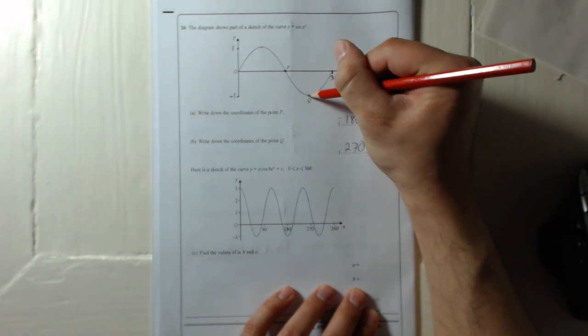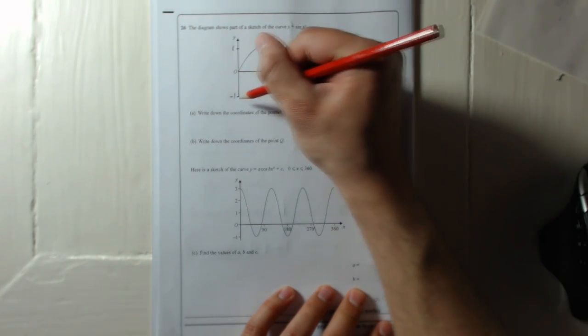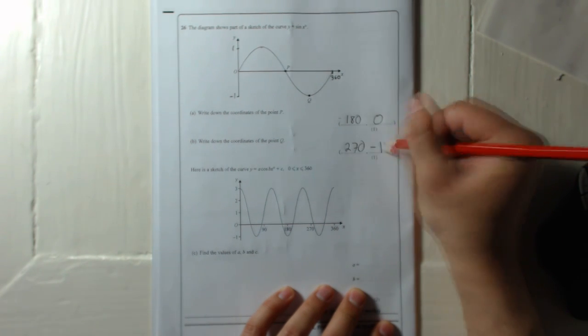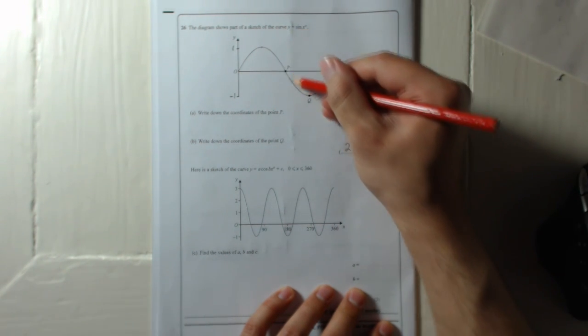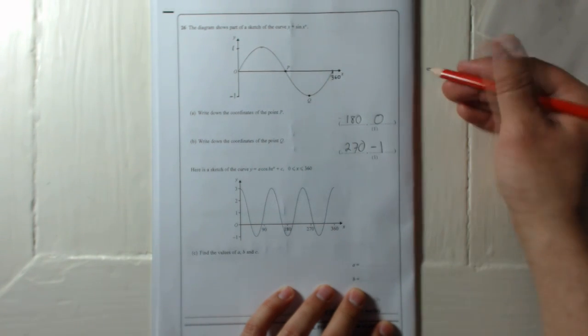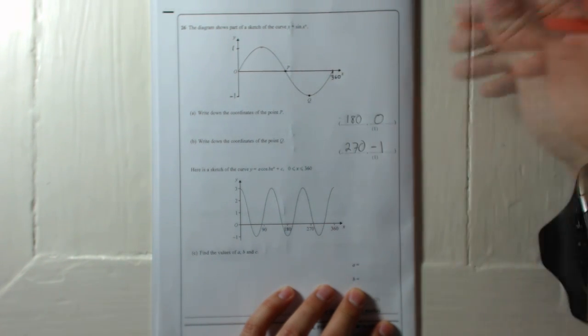And it reaches this low part, the lowest part of the sine curve, which is minus 1. So it's 270, minus 1. And this sine curve will actually keep going down and up and down and up.